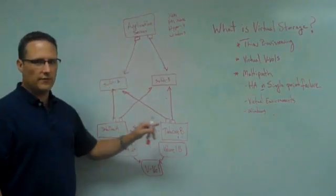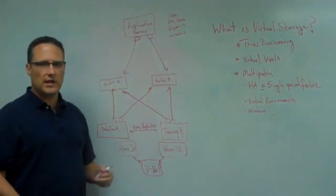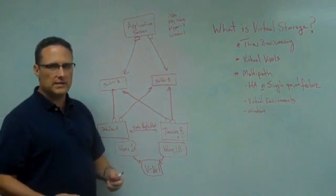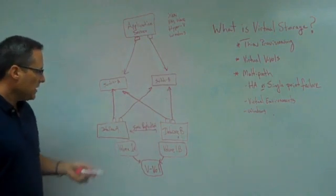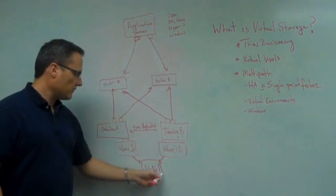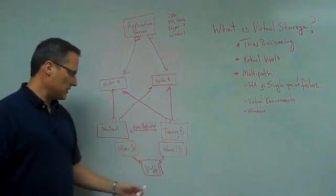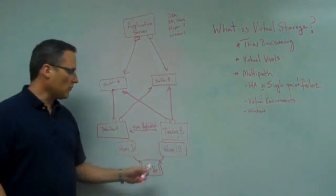Application server obviously can't look at volumes on each side and understand what it's doing and utilize that. It just doesn't work that way. So what DataCore does is they create a virtual volume. Out of virtual volume 1A and 1B becomes the VVOL, virtual volume or LUN.